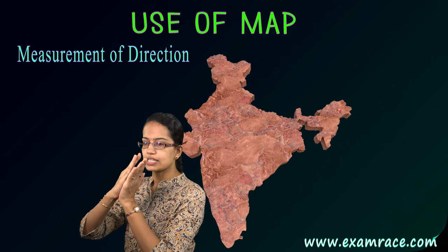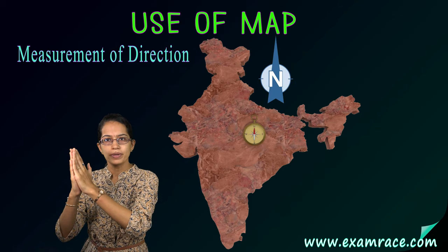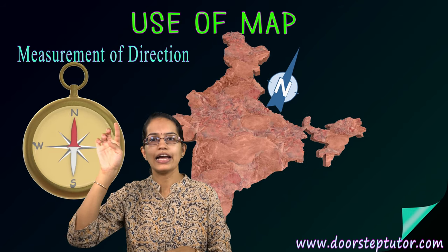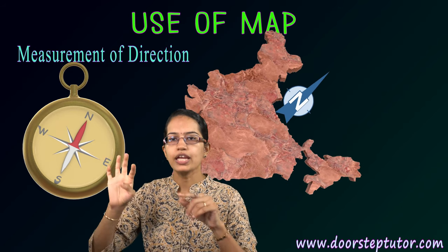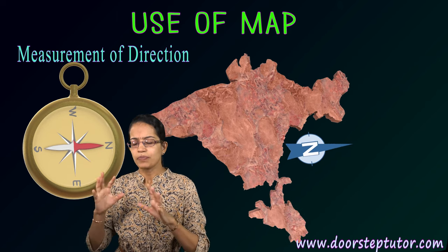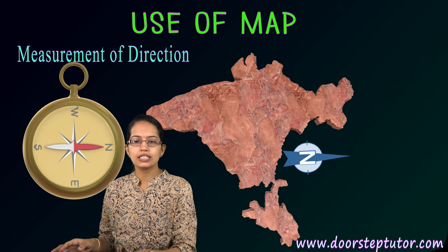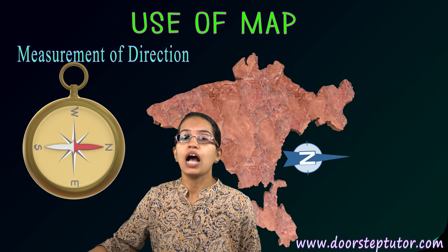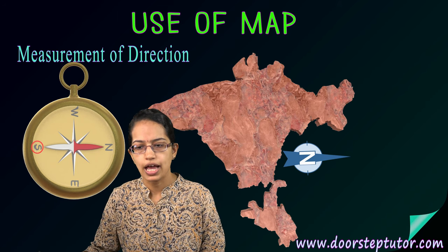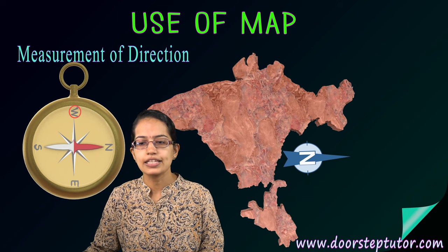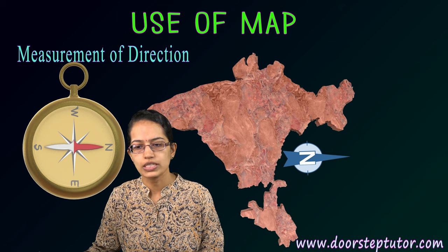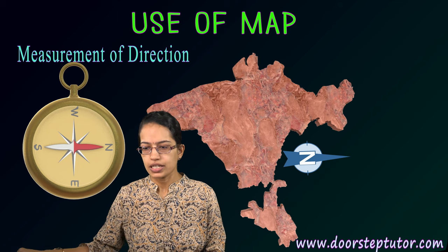Direction is the angular position relative to a common base. Any map we draw is aligned to the north as a convention. These directions are known as cardinal points — marked as north, south, east, and west. In between, you have northeast, northwest, southwest, and southeast as intermediate directions.